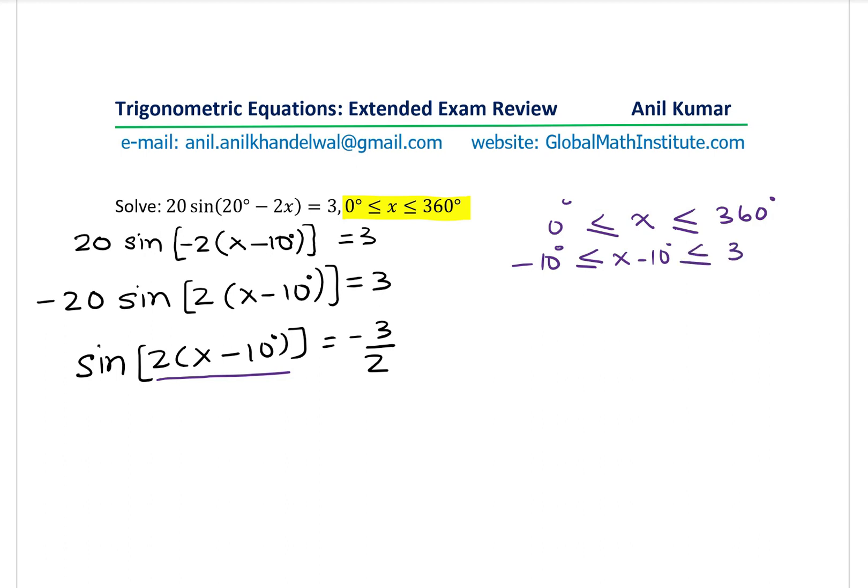Taking away 10 gives us 350 degrees. And now we multiply by 2, so we get minus 20 degrees to 2(x-10°). And that gives you 700 degrees. So for the argument 2(x-10), our domain is now minus 20 to 700 degrees. Is that clear to you?